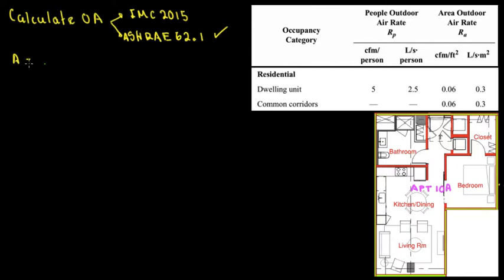So for ASHRAE 62.1, what we have is the area of this place. It is 530 square feet, we have the height. The height is 8 feet, and the number of people is equal to 2.